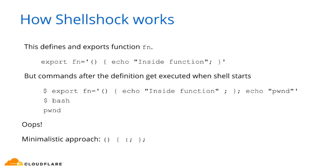When Bash detects an environment variable that looks like a function definition, it will execute the environment variable as a command line. When Bash does it internally, that's fine because the only thing in that environment variable is a function definition — nothing afterwards, so no side effects. But as a human using Bash, we can do more than that. We can append arbitrary commands to it, as in the second case. And then when you execute Bash, Bash will look for environment variables that look like function definitions and execute it as a command line. And then we're owned. It's not good — caused by trusting user input when it probably shouldn't have.